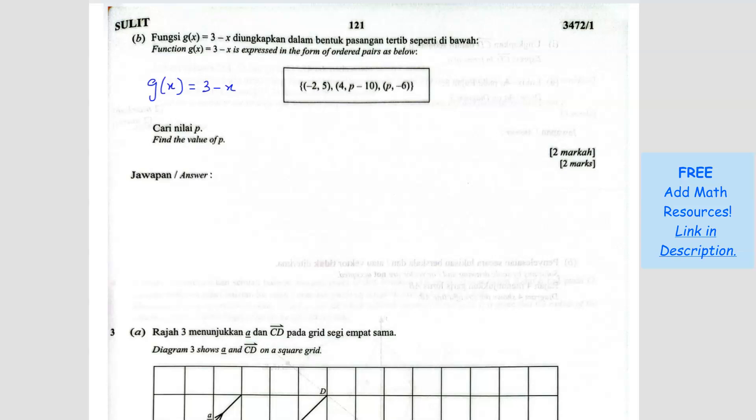So ordered pairs means what? When they give you ordered pairs, the first number represents the x value, the input, and the second number represents the output. So in this case, the output is g(x).